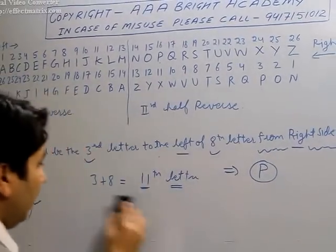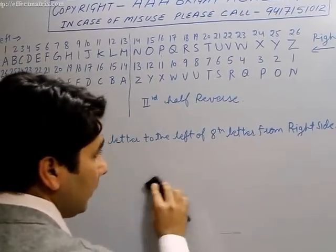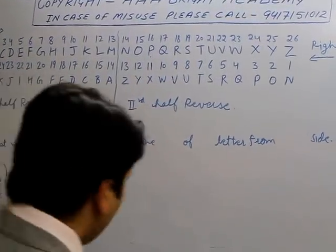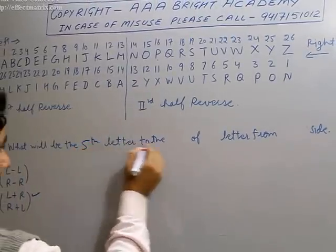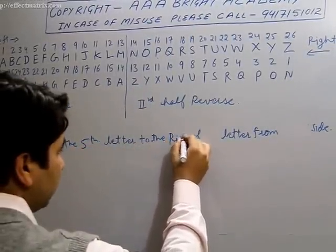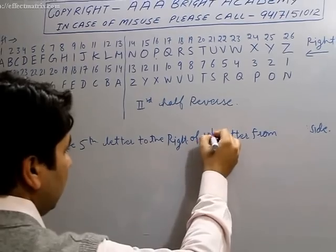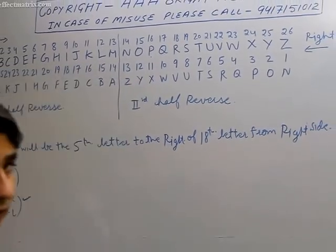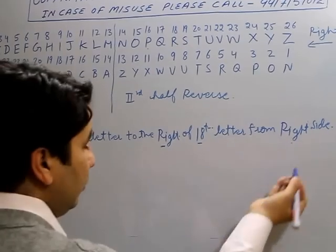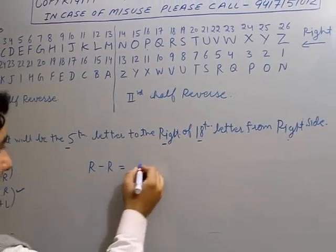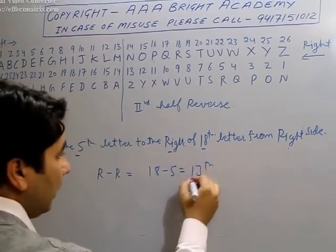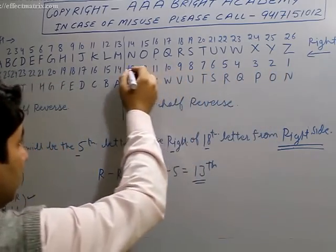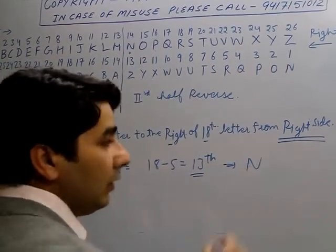Let's take one more example. What will be the 5th letter to the right of the 18th letter from the right side? Both are right, so: right to right means minus — 18 minus 5 equals 13. You have to see the 13th letter from the right side. The 13th letter from the right is N. So the answer is N.